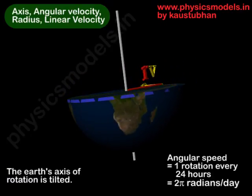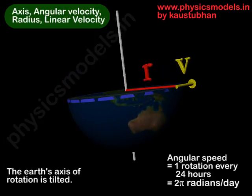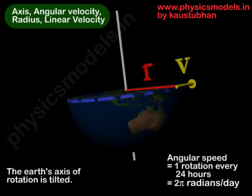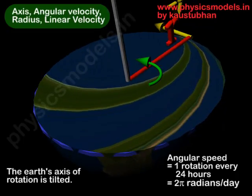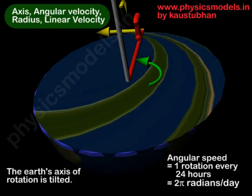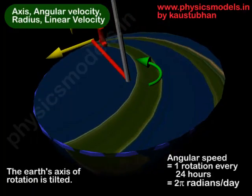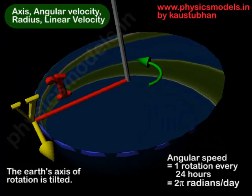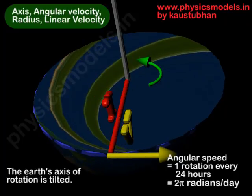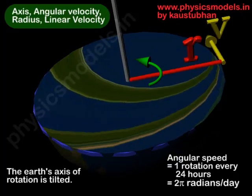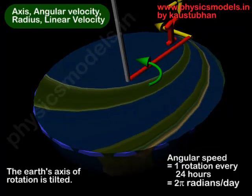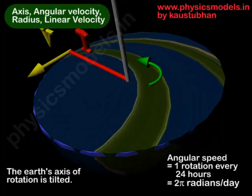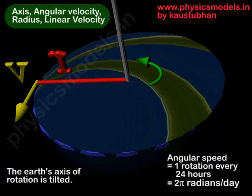We have cut the earth in half and you can see that the radius is r at the equator, and the tangential velocity of a particle or a person standing on the equator is shown as v. It is a velocity vector — it has an arrow, a magnitude, and a direction. v is always perpendicular to r, and that's important to remember: in circular motion the tangential velocity is always perpendicular to the radius.